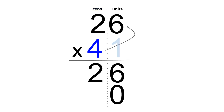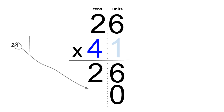So let's carry out the steps. 4 times 6 equals 24. Now the answer 24 is a two-digit number. Take the units digit — in this case the 4 — and place it in the answer column. We'll keep the remaining digit, the 2, on the side for now.